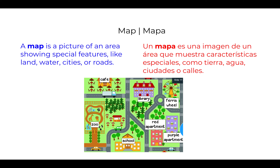A map is a picture of an area showing special features like land, water, cities, or roads. Un mapa es una imagen de un área que muestra características especiales como tierra, agua, ciudades, o calles.